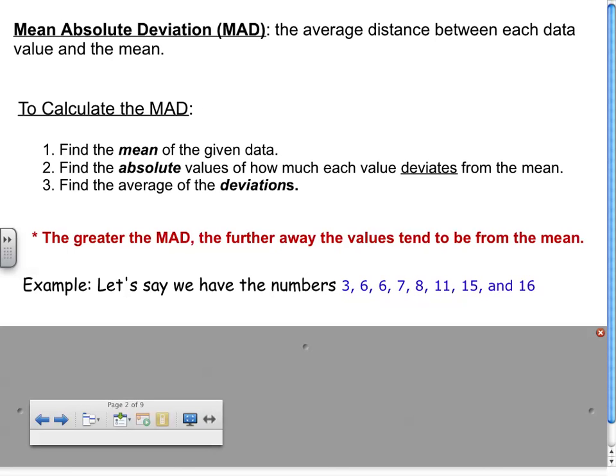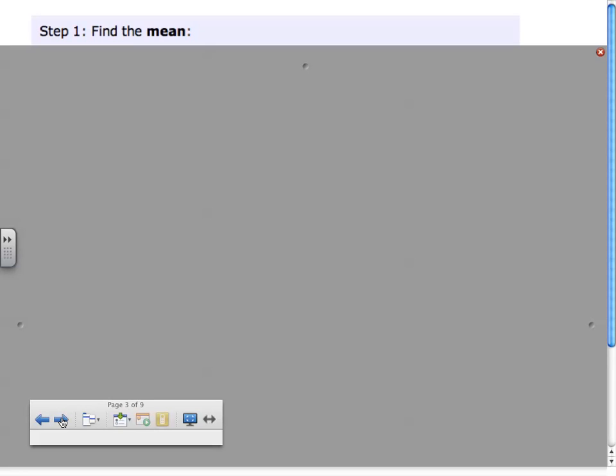Let's say we have the numbers 3, 6, 6, 7, 8, 11, 15, and 16. We don't know what the numbers mean, but let's pretend like we have them. To calculate the mean absolute deviation, I'm going to follow these three steps, and they're illustrated on the next page. If you want to try this, you can pause the video as I go through it.